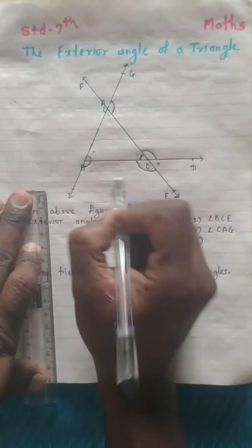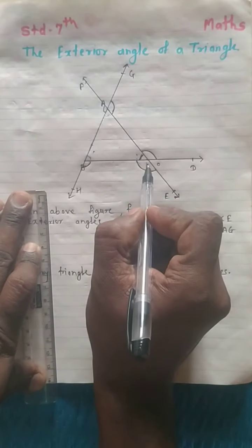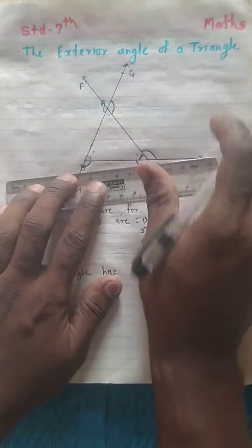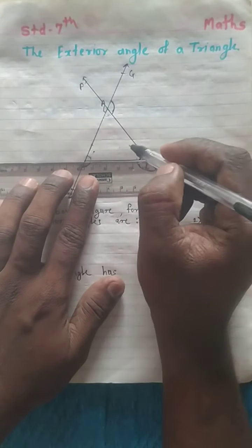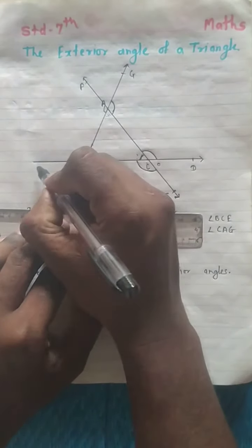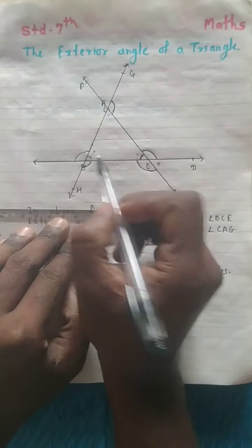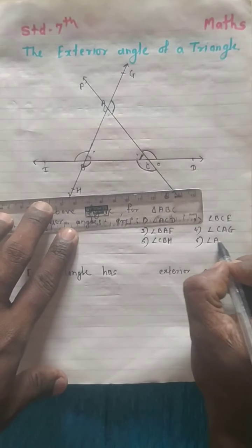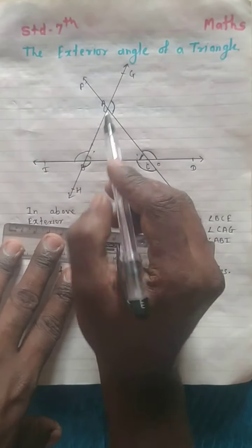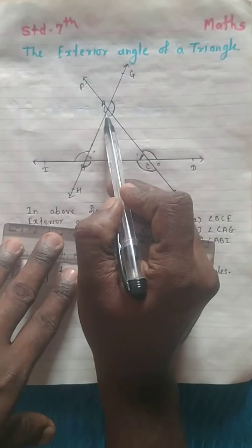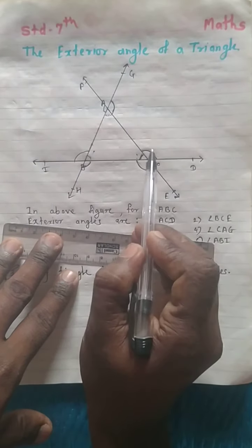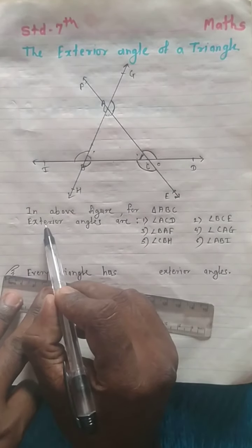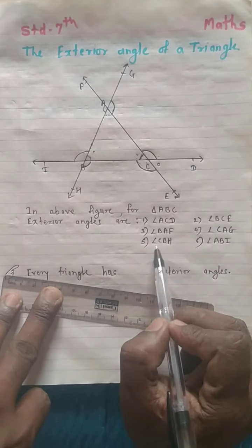At vertex B, we also get an exterior angle — angle CBH is an exterior angle. And angle ABI is also an exterior angle. So for each interior angle there are two exterior angles.